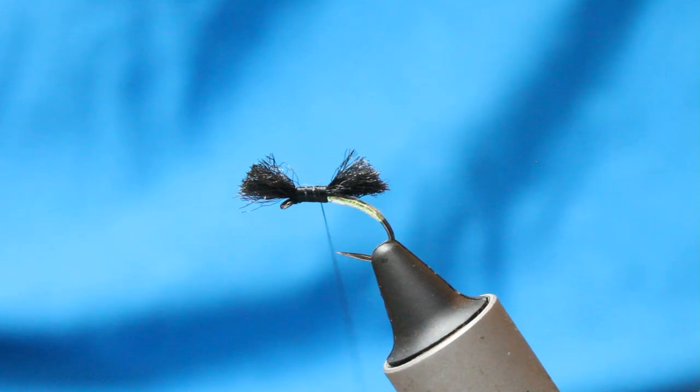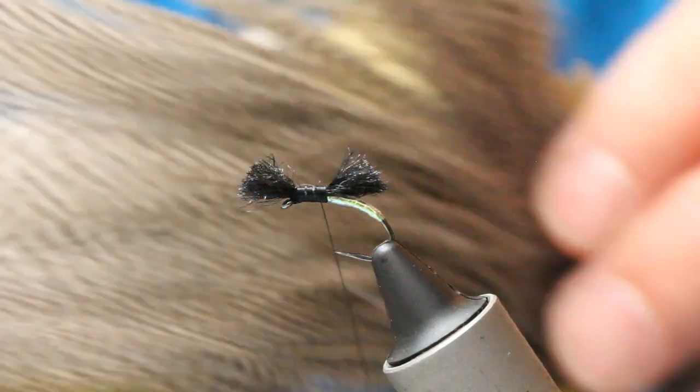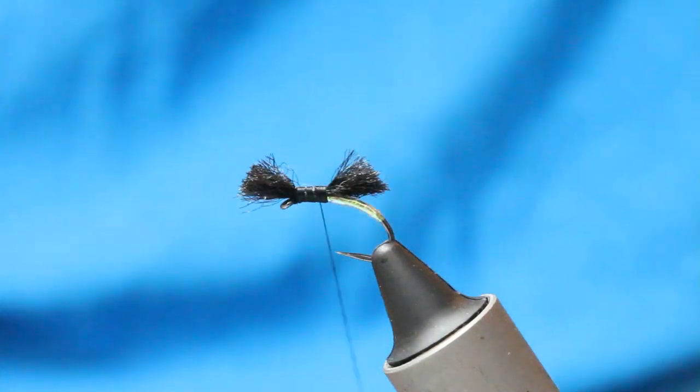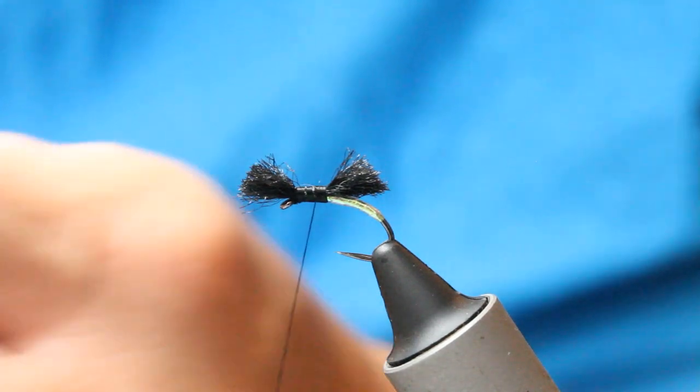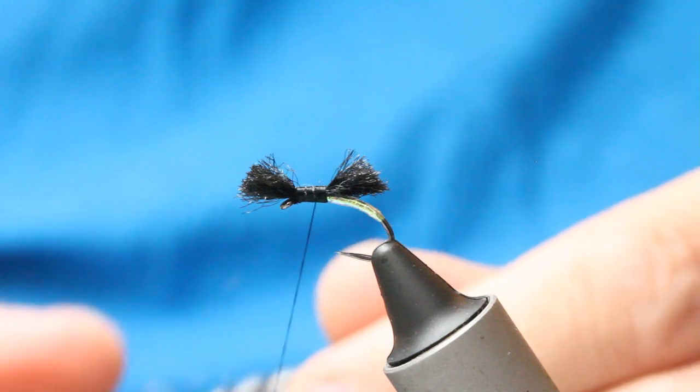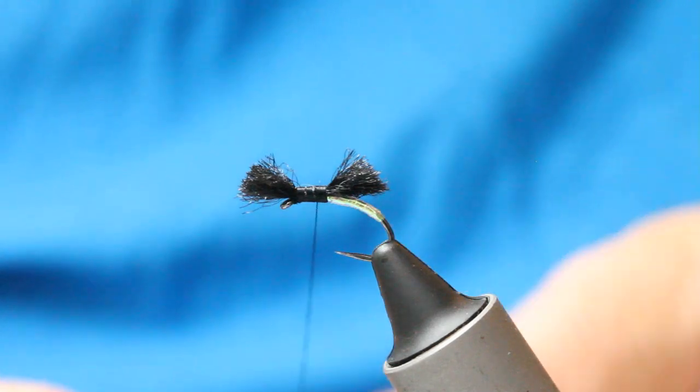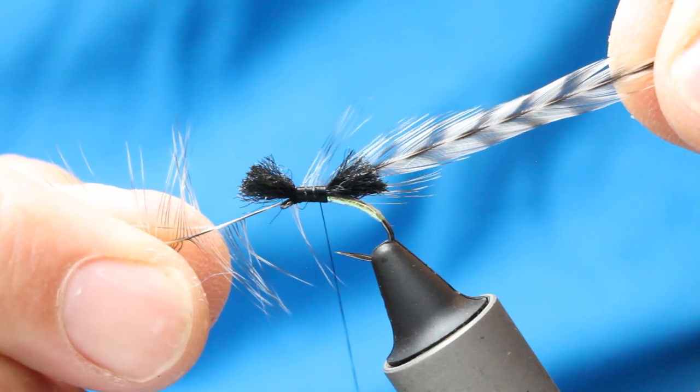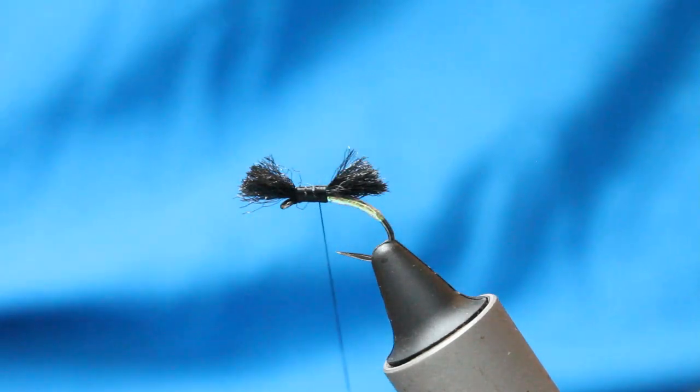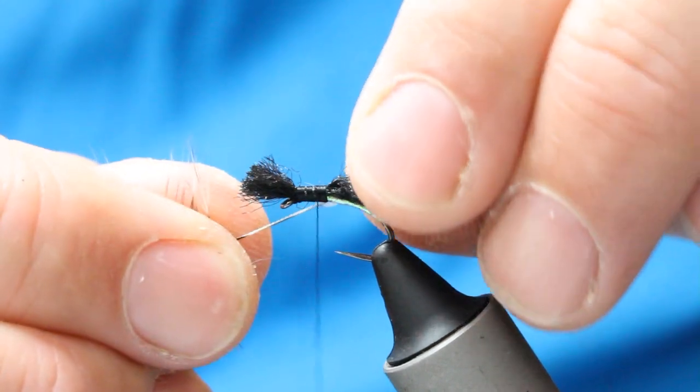Like so. I then come in with a grizzle hackle. This one looks good. Yeah, it's about the right size, so about the drop of the gape of the hook and then half again. Let me just tie them in.